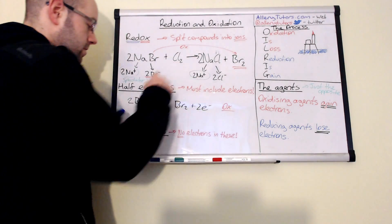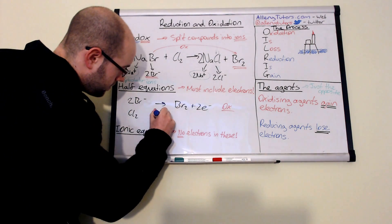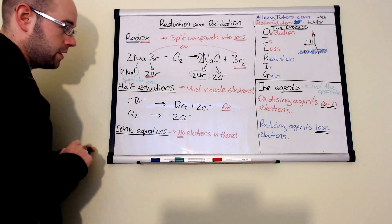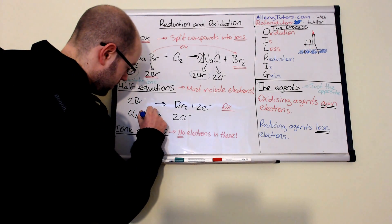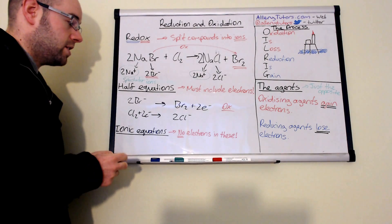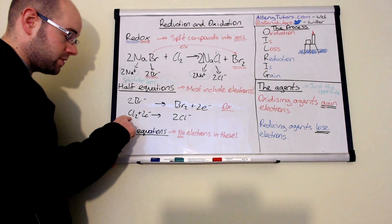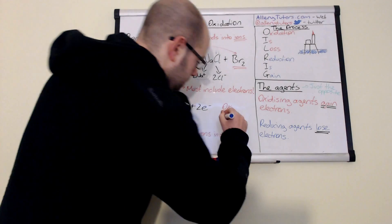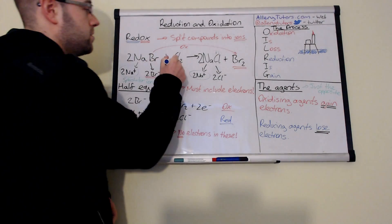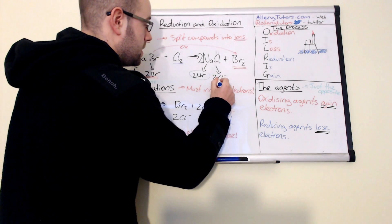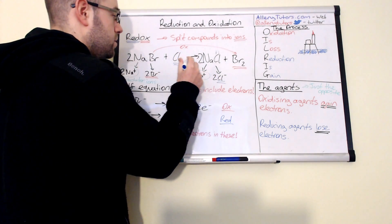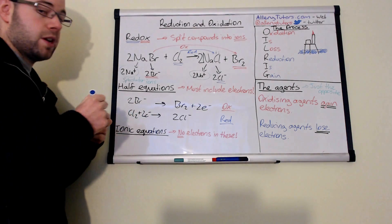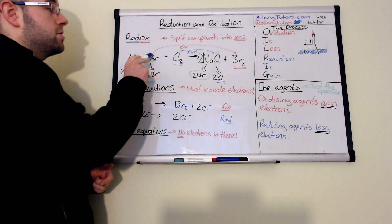The next half equation is Cl2 forming two lots of Cl-. We have a 2 negative charge on the right and neutral on the left, so the 2 electrons go on the left-hand side. This process is clearly gaining electrons - Cl2 accepts electrons to form Cl-. So this is a reduction reaction. In summary, our chlorine is undergoing reduction and our bromide ion is undergoing oxidation.